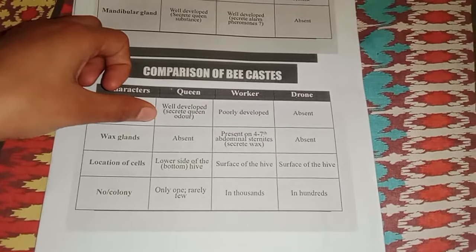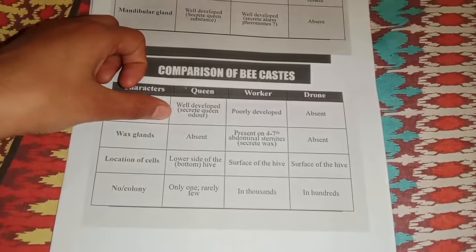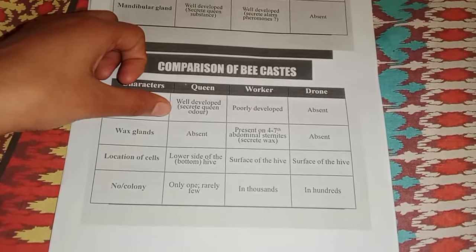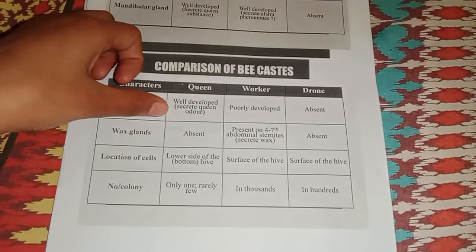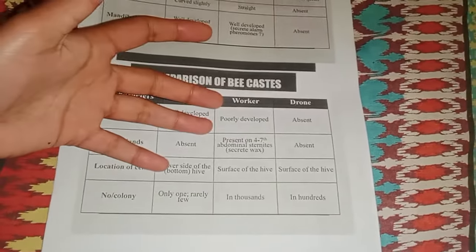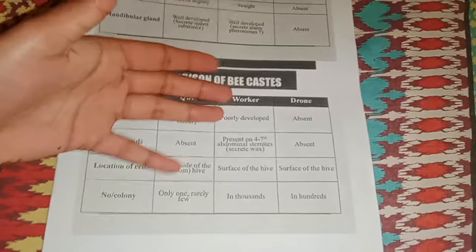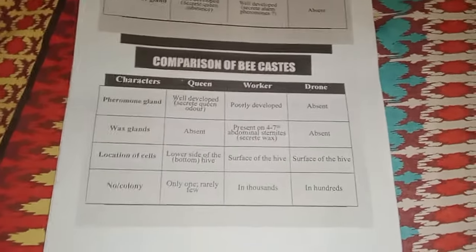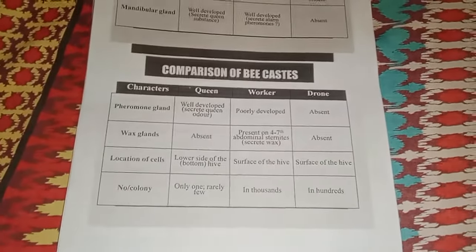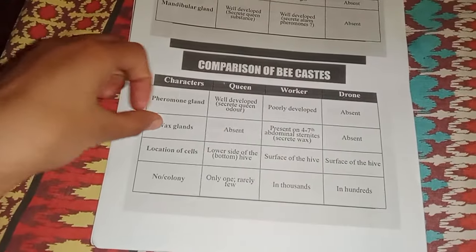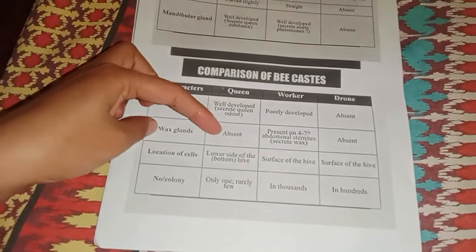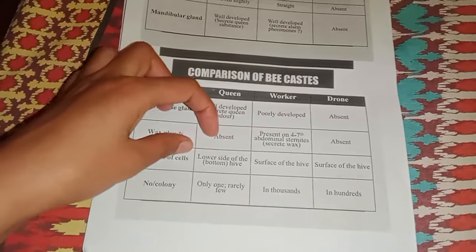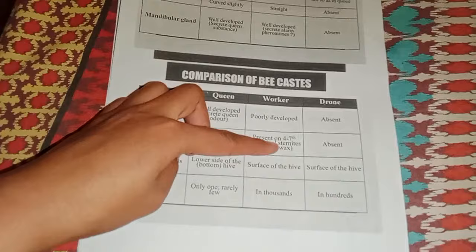Wax glands are absent in the queen. In workers, wax glands are present on the fourth to seventh abdominal segments and are used to scrape wax. In the drone, wax glands are absent. Regarding location of cells, the queen is located on the lower side of the hive, the worker on the bottom surface of the hive, and the drone on the surface of the hive.